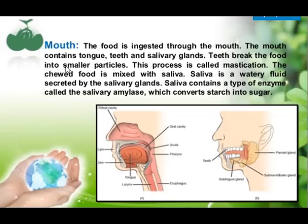The mouth contains tongue, teeth, and salivary glands. The mouth is also known as the buccal cavity, so tongue, teeth, and salivary glands are situated in the buccal cavity.